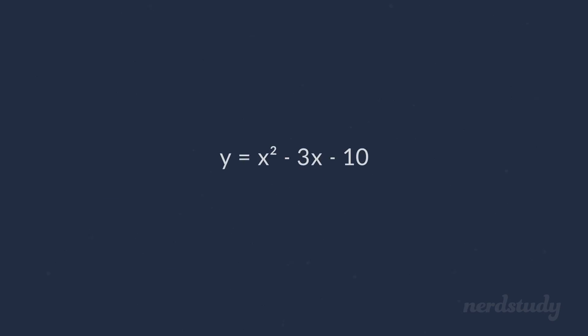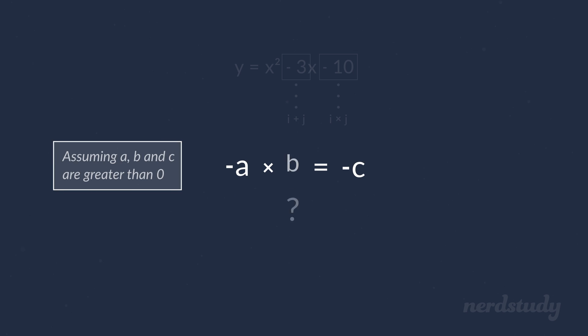In this example, we're looking at factors of negative 10 that would add up to equal negative 3. Now, let's think about this for a second. If two numbers multiply together to get a negative number, then it must be a negative number and a positive number.